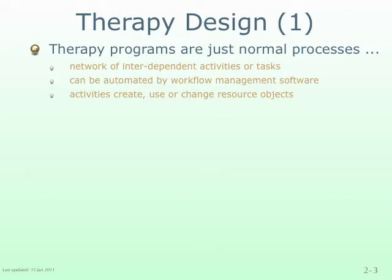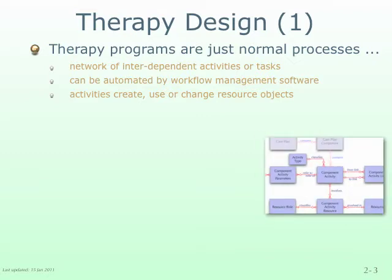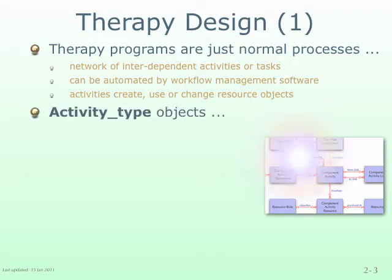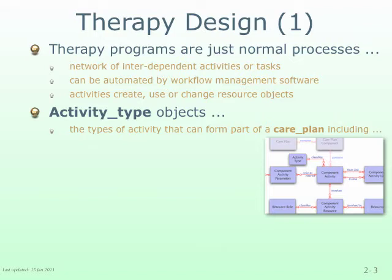We will investigate these resource dependencies shortly. The flexibility needed by the Stroke Rehab app is provided by classifying each activity that forms part of a therapy program into a number of different activity types. So we need to define some activity type data objects to represent the various types of activity that might be included in a therapy program or a care plan.